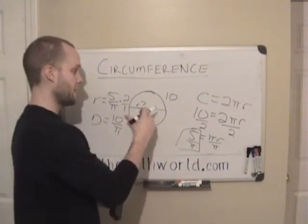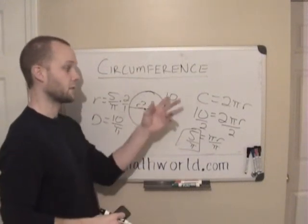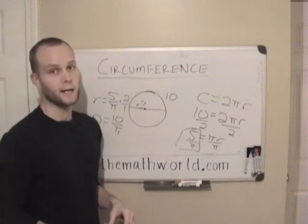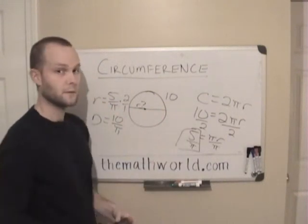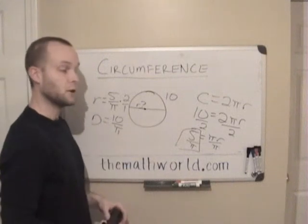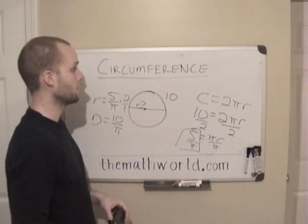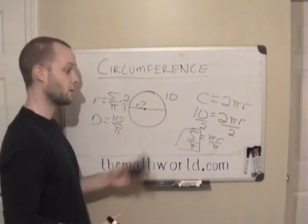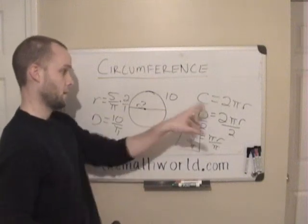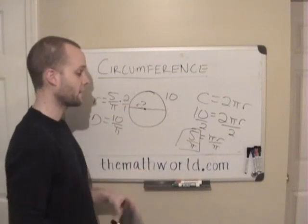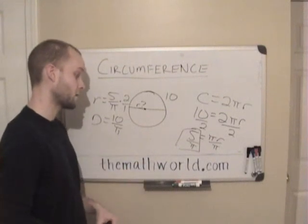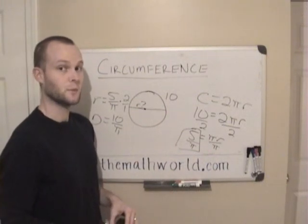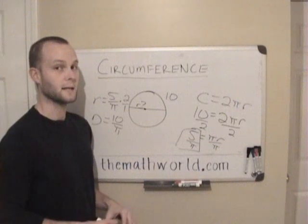So it doesn't matter if they give you the radius or diameter and ask for circumference, or if they give you the circumference and ask for the radius or diameter. You can work backwards depending on what you're given. Now that you know all this, you can do any circumference question. I hope you enjoyed this video on circumference and learned how to use the different equations. Please subscribe to the YouTube channel and check out TheMathWorld.com to learn other geometry topics and practice on example problems. Thanks for watching and I'll see you in the next video.